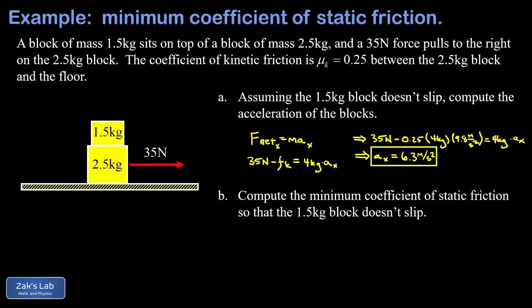Now in part B we want to get the minimum coefficient of static friction so that the 1.5 kilogram block doesn't slip. So now we're just thinking about what's happening to the 1.5 kilogram block instead of the combination of blocks. When we start to put force vectors into the diagram we have the weight of that guy pointing downward and the normal force pointing upward to balance that weight.